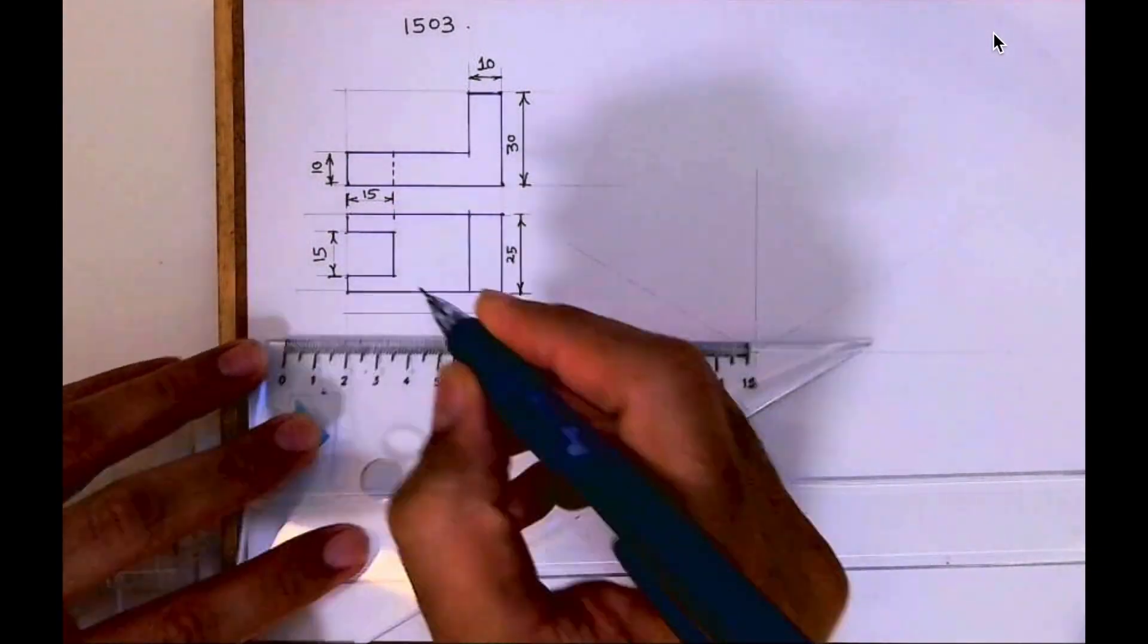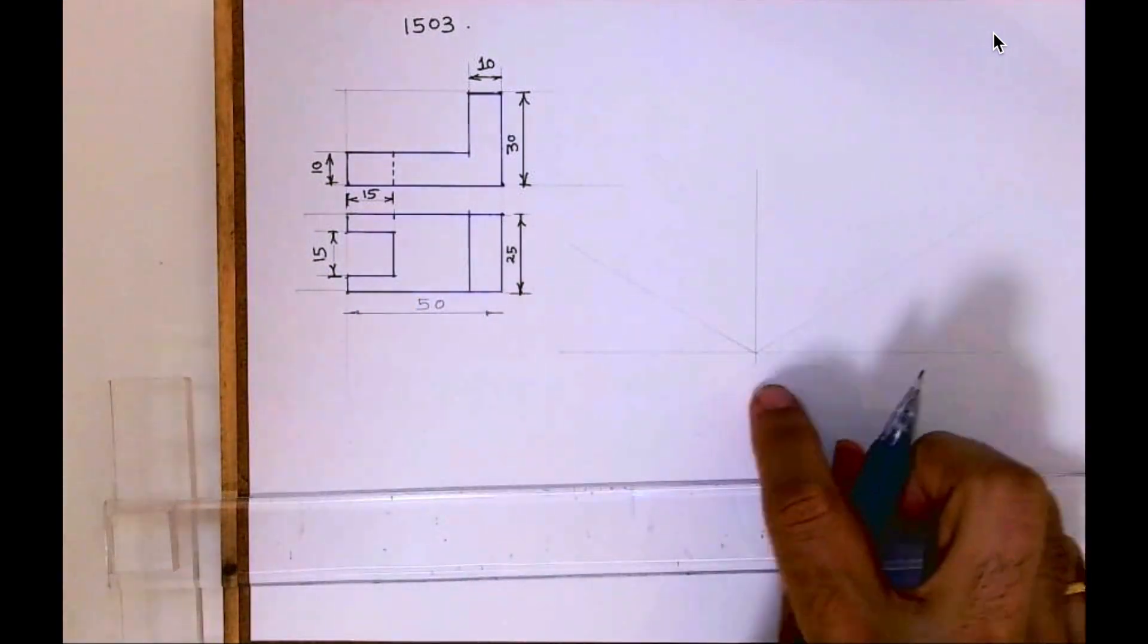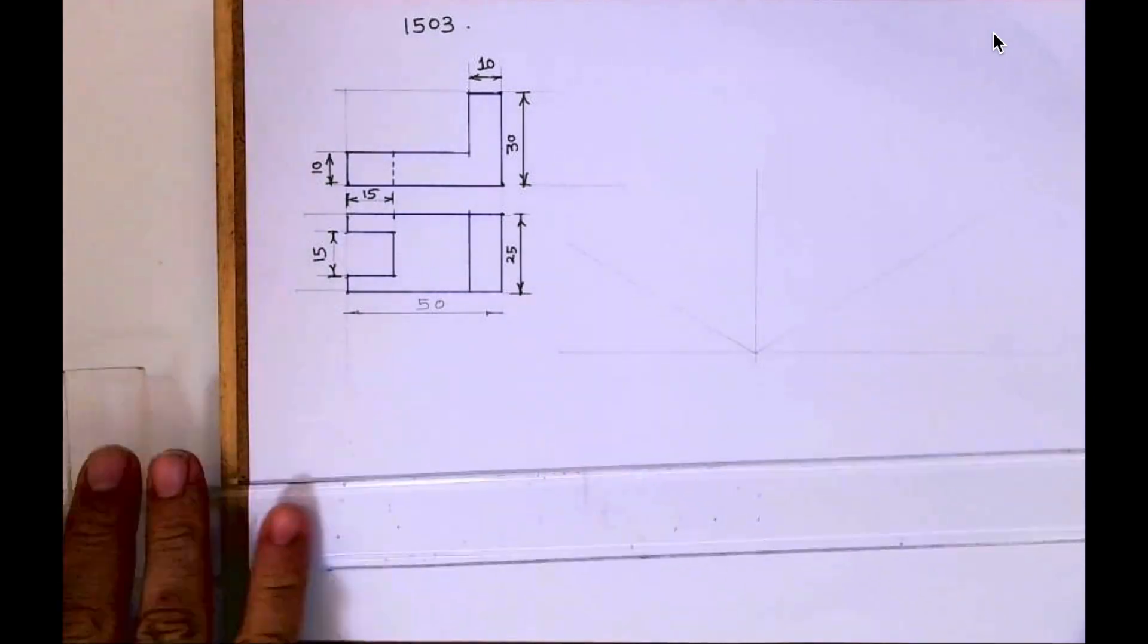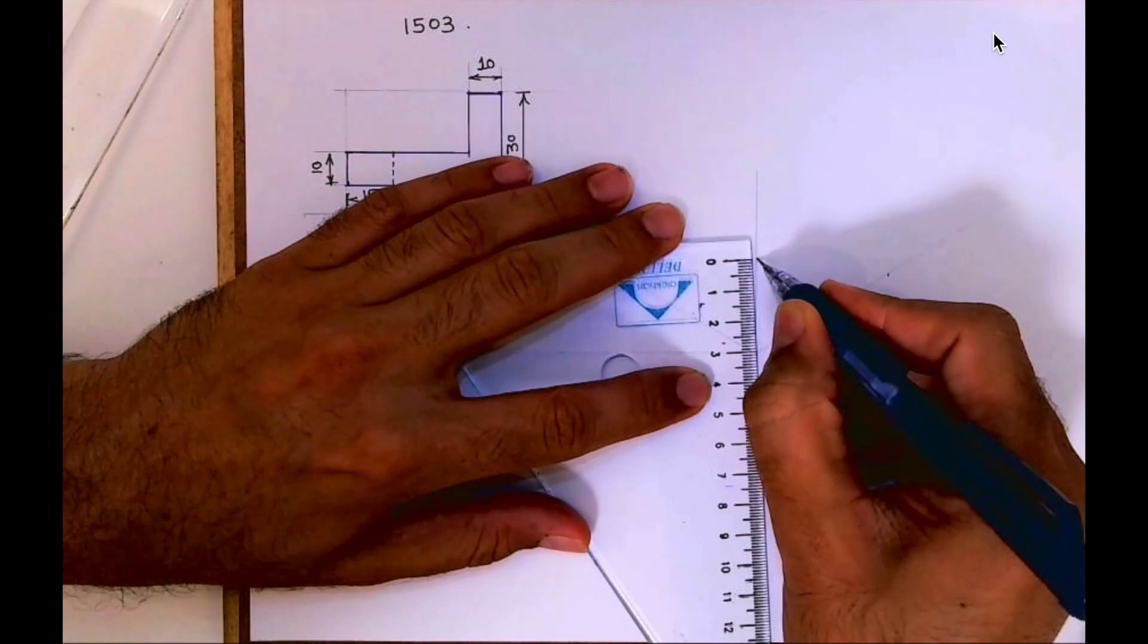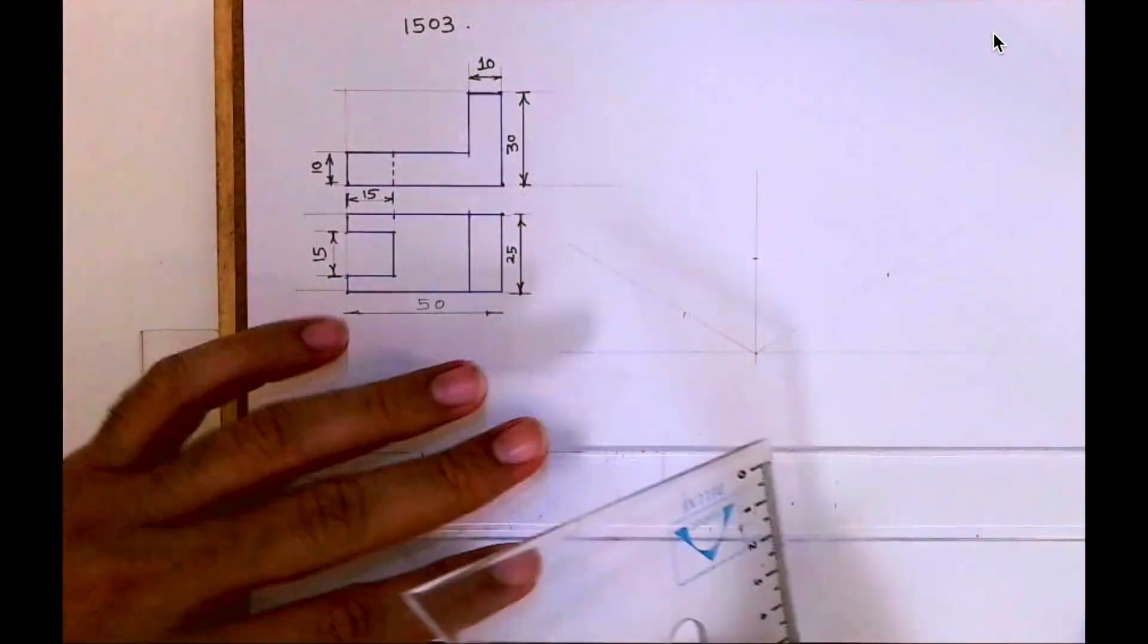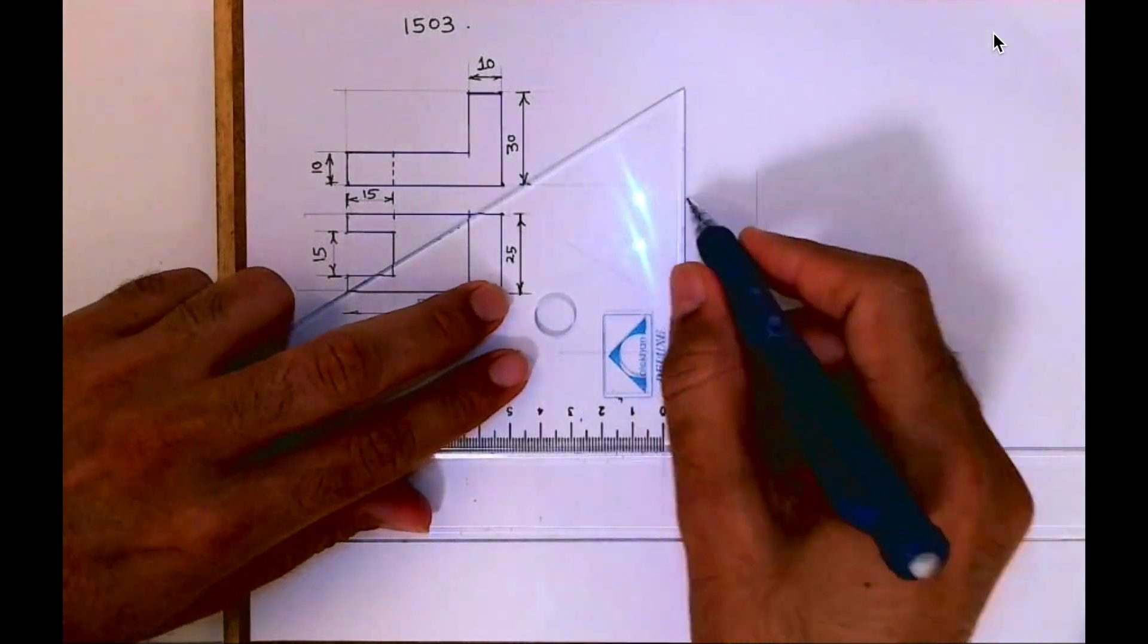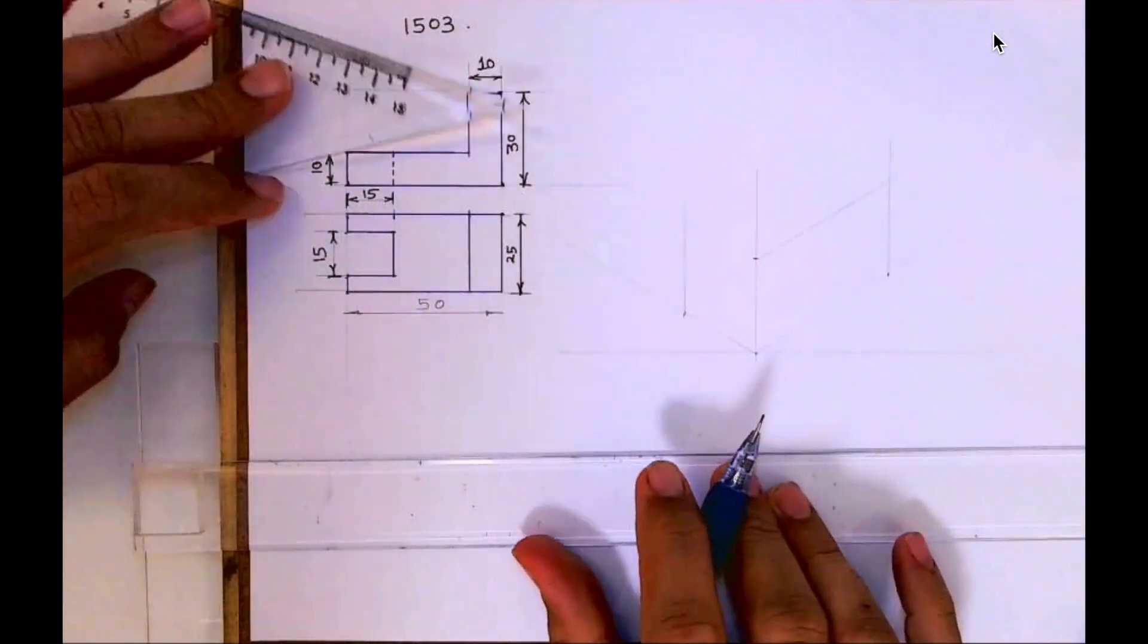This length is 50. I forgot to write it, so I am writing it right now. On the right-hand side we have to take 50, height 30, and width 25. Then I will draw a vertical line and complete this box.